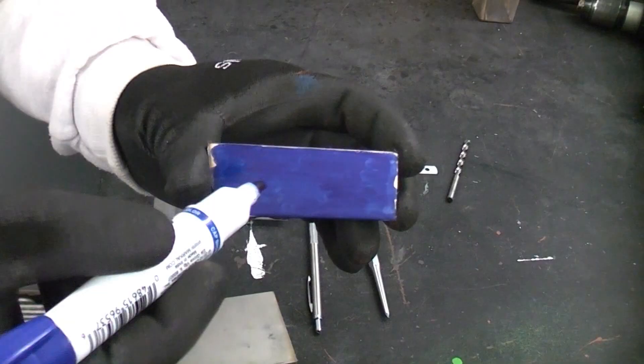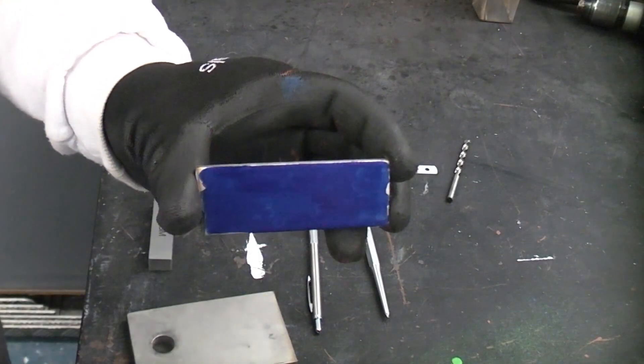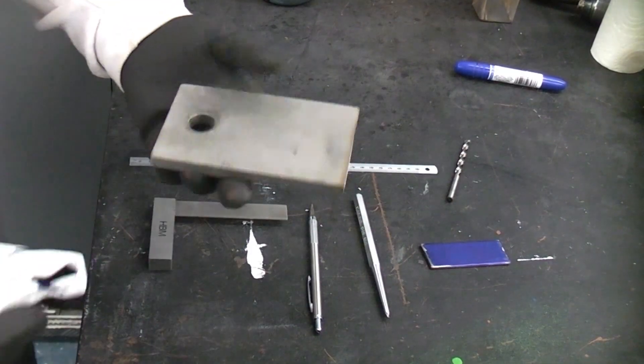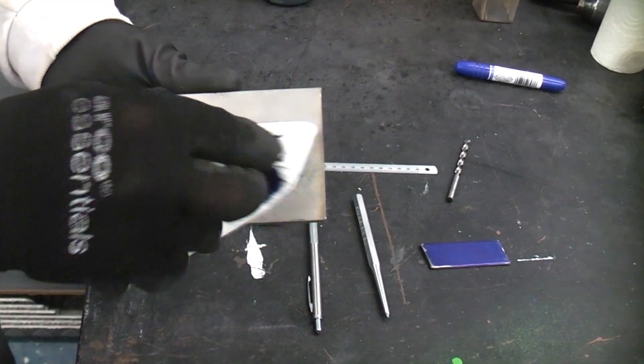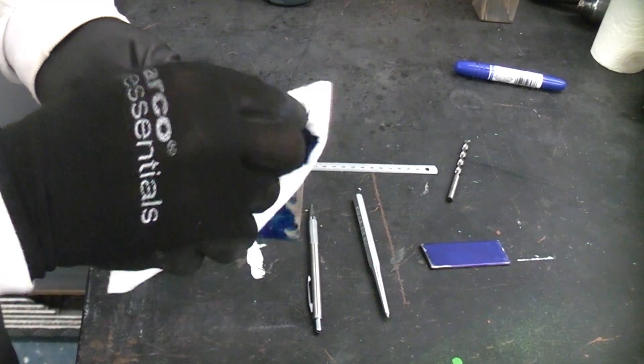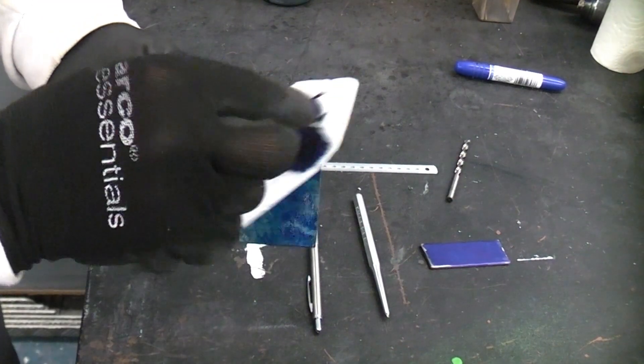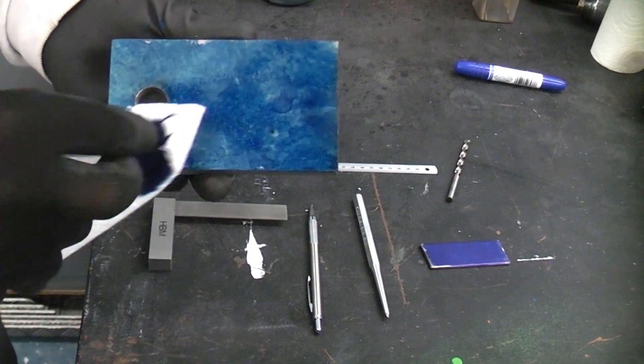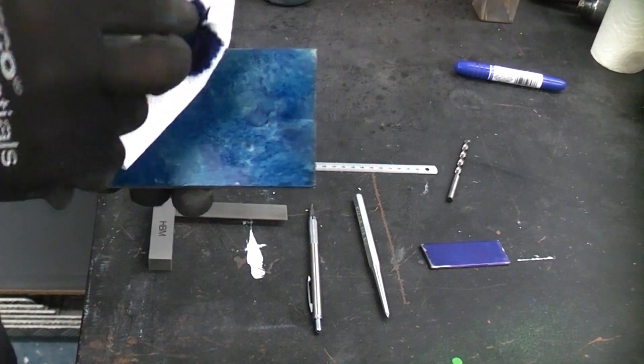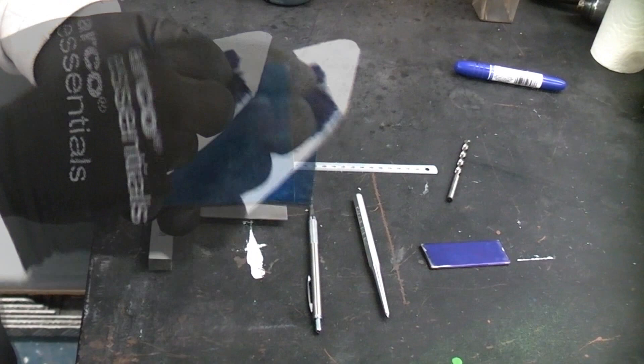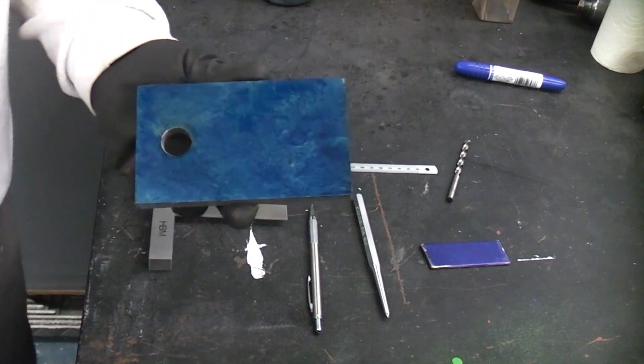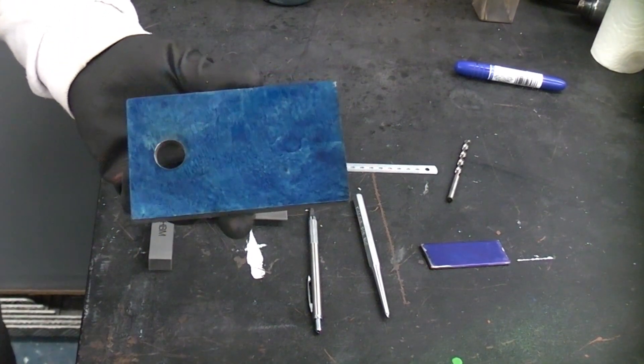Once you've done that you can easily scribe a line and you can see it very clearly. I'm now just going to dab some engineer's blue onto this piece of metal. Now that it's colored with the engineer's blue it is a lot easier seeing any scribe lines.